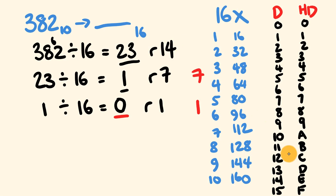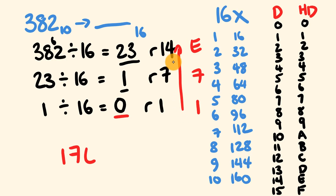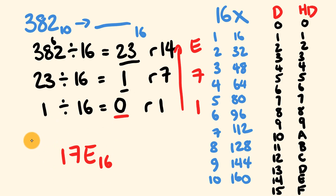Reading the remainders from bottom to top: remainder 1 = 1, remainder 7 = 7, remainder 14 = E. So 382 base 10 is equal to 17E base 16. That's how you convert decimal to hexadecimal.